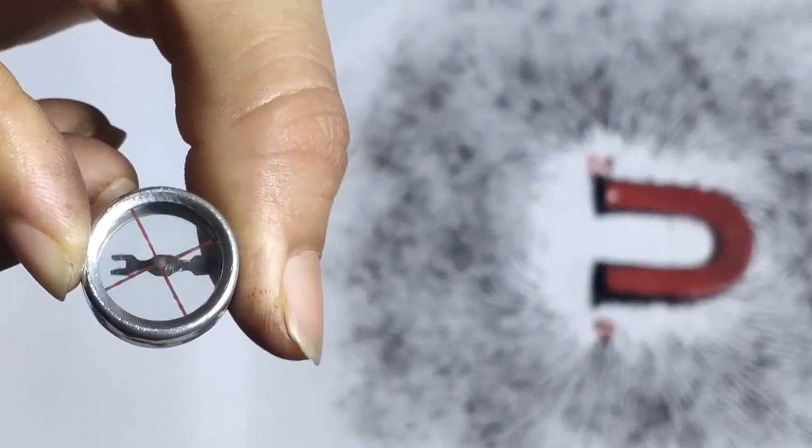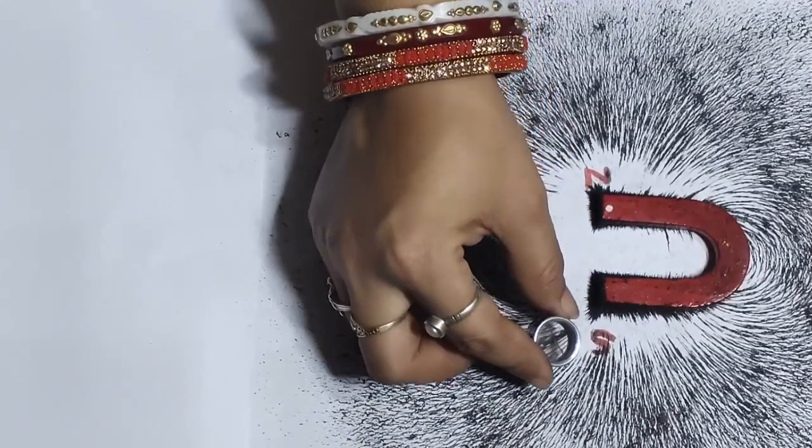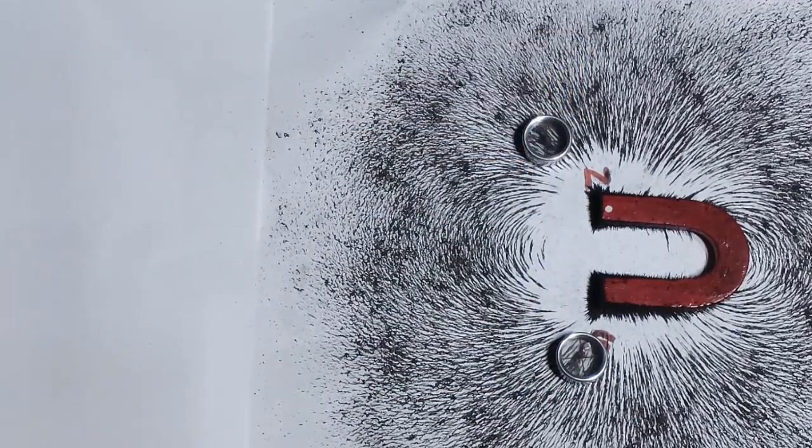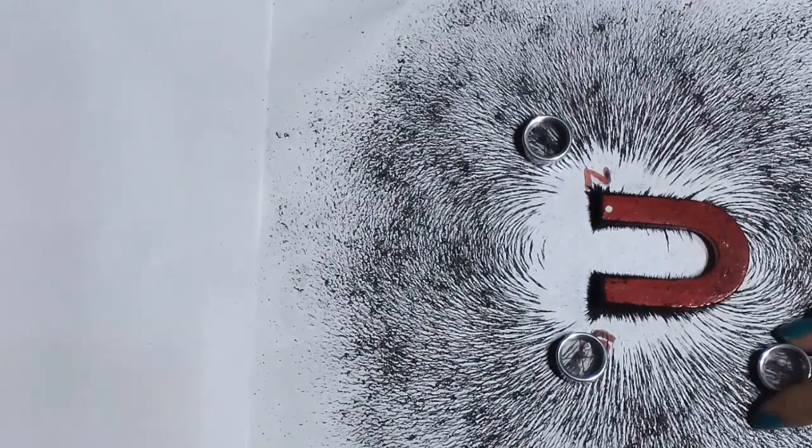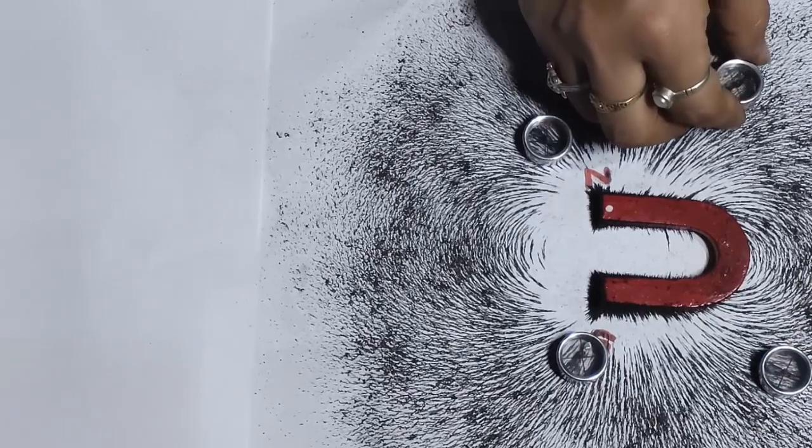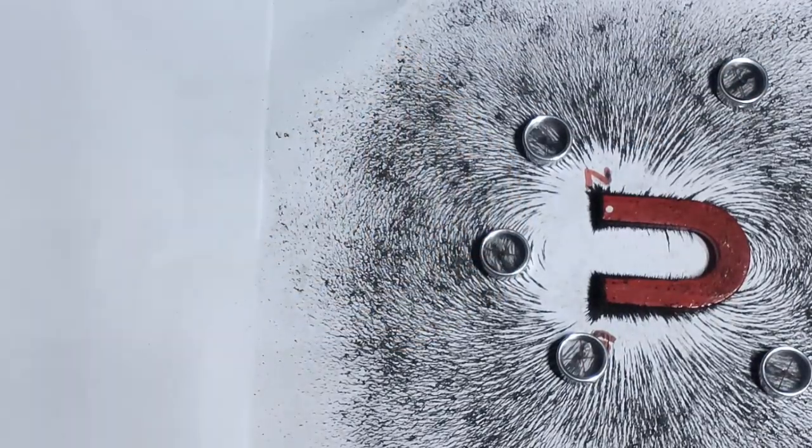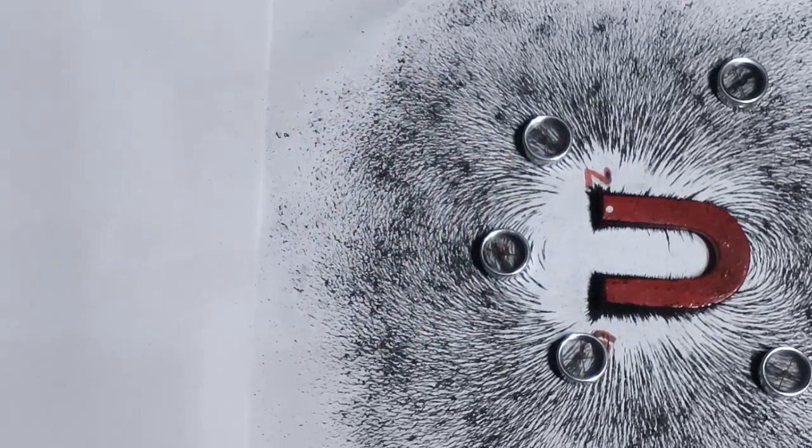Now I have some compass with me, which I will be placing around the magnet to match the direction of the lines of force with pattern of iron filings. Now see properly, the needles align themselves as per the pattern of the iron filings. Do remember that this is due to the magnetic fields of the horseshoe magnet.